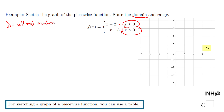I'm also going to write it in interval notation: open parenthesis negative infinity comma infinity close parenthesis. That's the same thing — the domain is all real numbers. Now, for the range, we'll find it by using the graph.